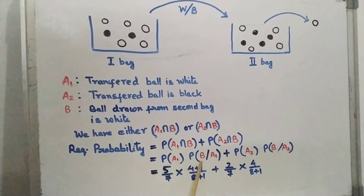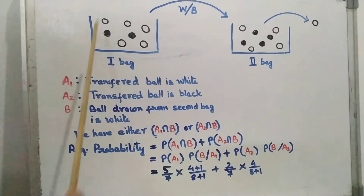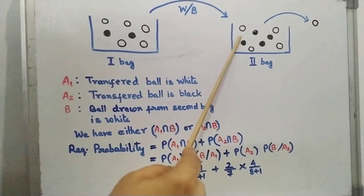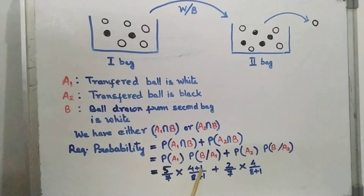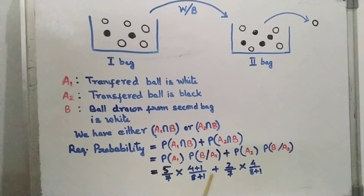Next is the probability of getting a white ball from the second bag when the transferred ball is white — that is P(B|A1). If the transferred ball is white, the number of white balls in bag two increases by 1, giving 4 plus 1 equals 5 white balls. The total number of balls also increases by 1, giving 8 plus 1 equals 9. So P(B|A1) is 5/9.